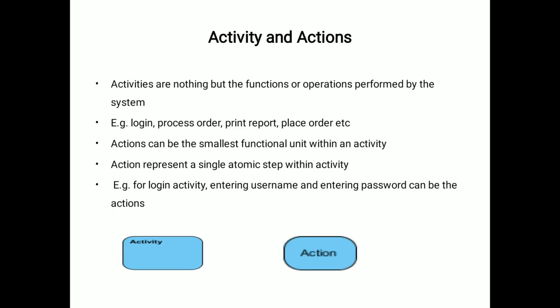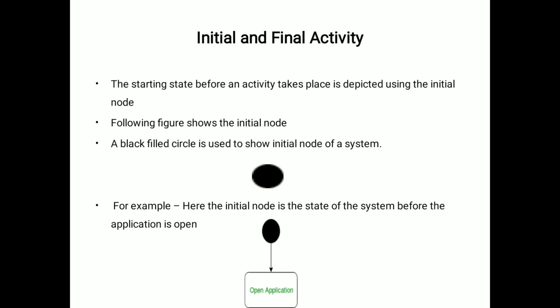This is initial and final activity. For both, the sign is similar. But for initial activity, as it is initialized, control flow is to the next step, and from the control flow to the end, that control flow is different. The starting state before an activity takes place is depicted using the initial node. A black filled circle is used to show the initial node of a system. For example, here is the initial node, that is the state of the system before the application is open.